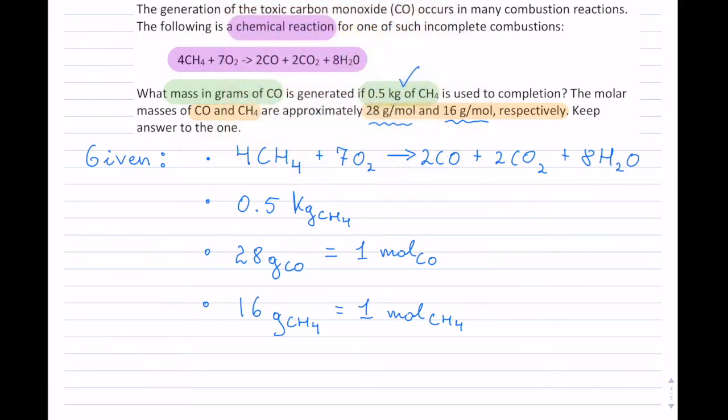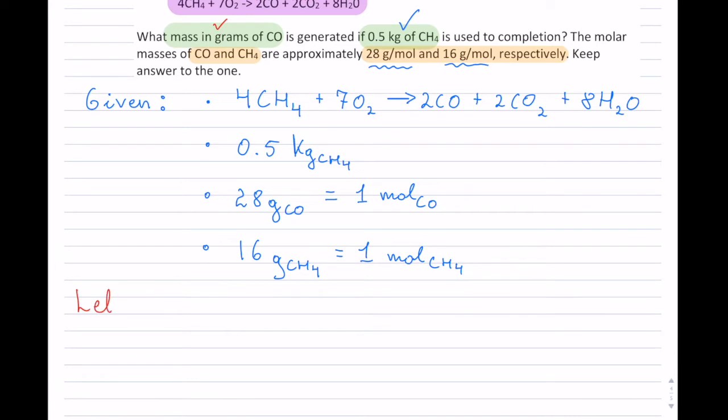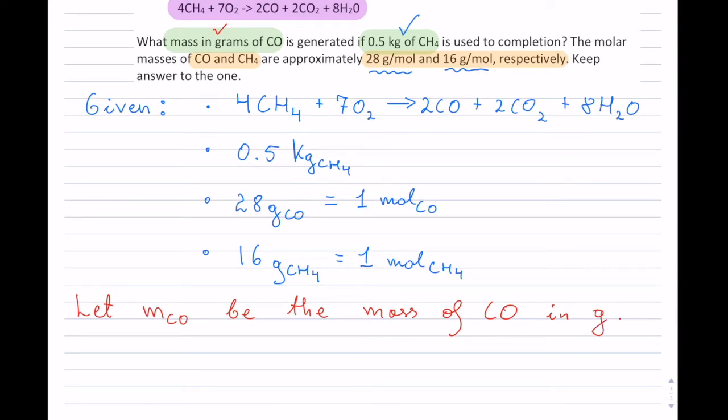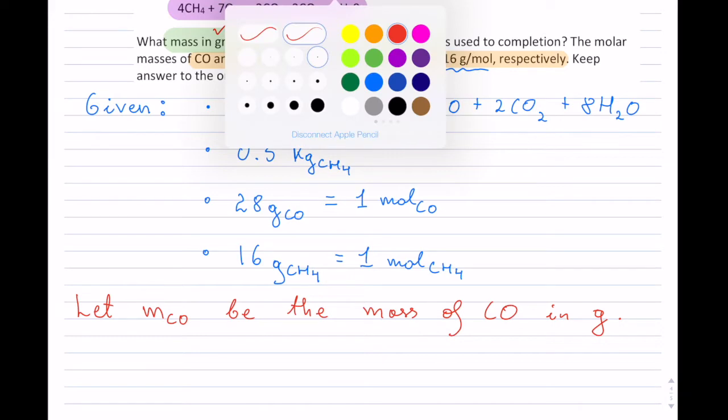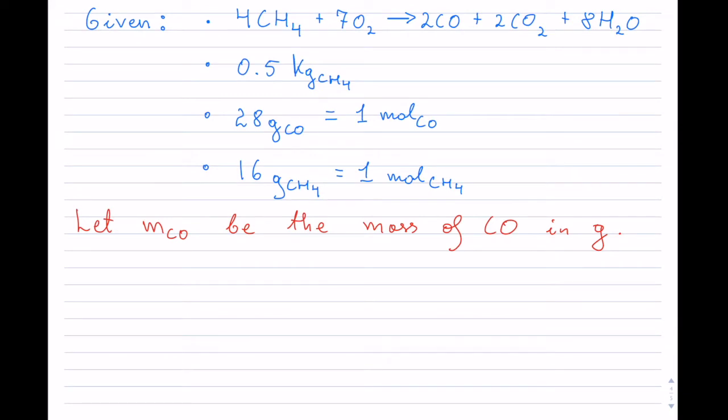So what am I solving for again? Well, I want to know the mass in grams of CO. So I will say, let M, and it's M mass of CO, be the mass of CO. And you can say here, if you like, in grams. And now, next, we can try to set up our equation. So we need these givens in order to do this.